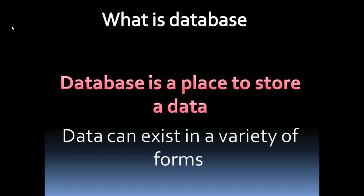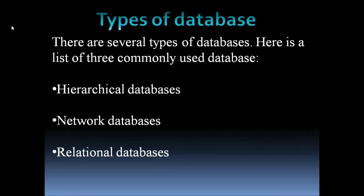Based on what type of data you're going to store in a database, I can divide or categorize the database into several types. There are several types of databases, but here I've taken only the main three: the first one is a hierarchical database, the second one is a network database, and the third one is a relational database. I'm going to explain all three in detail.